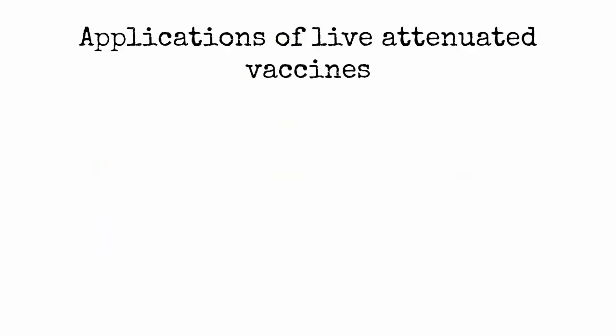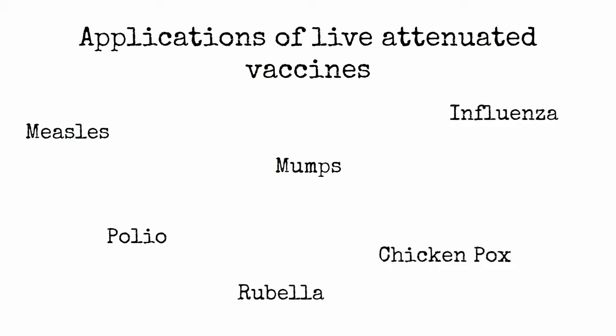Currently, live attenuated vaccines are used in the fight against measles, polio, mumps, rubella, influenza, chickenpox, and many other viral diseases.